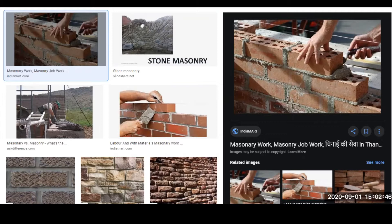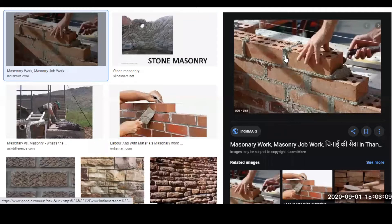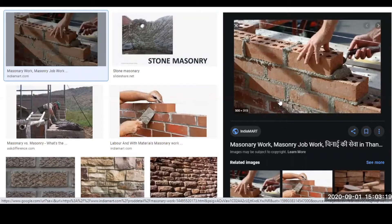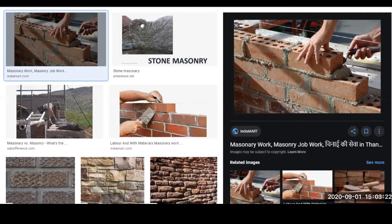In masonry construction, units are arranged in a proper and systematic manner, bonded together to form a homogeneous mass in such a way that they can withstand loads from other layers and transmit them without failure or disintegration. Masonry, or what we call 'chinai' in Hindi, has different types of classifications.